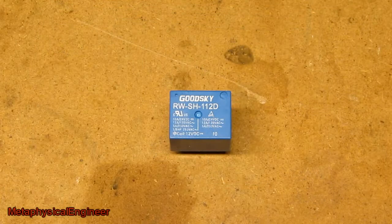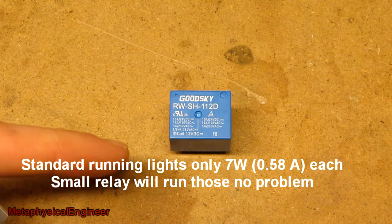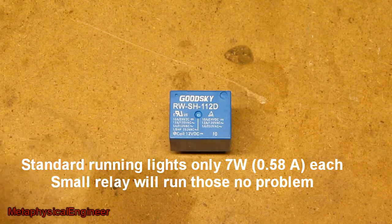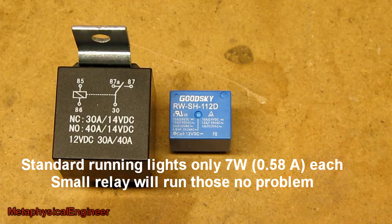The switchbacks only pull 200 milliamps each for 400 milliamps total, so I can use a compact 10 amp 12 volt coil relay instead of a much larger 40 amp standard automotive relay.